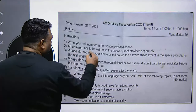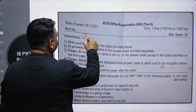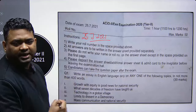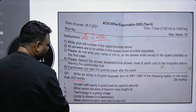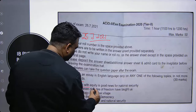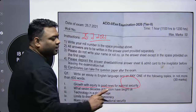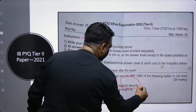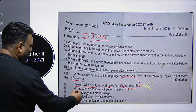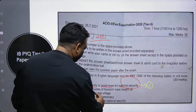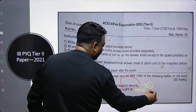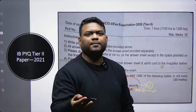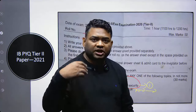This was the last paper, dated 25-7-2021, IBSI-2. You had to write in 400 words. First topic: 'Growth with equity is good news for national security.' Second topic: 'What seven decades of freedom have taught us?' — what impact on our country economically, socially, on thought process, and on security.